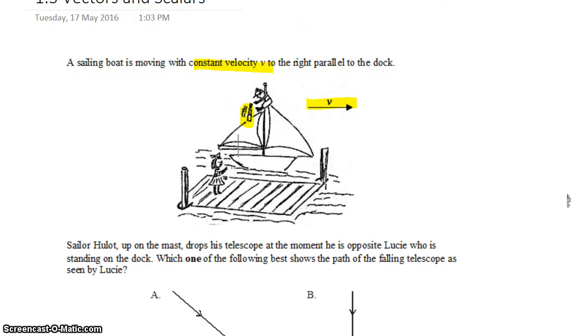So according to Lucy, she sees this telescope falling. It's going to have a component of its velocity which is downward. But at the same time it was moving with the sailboat at the moment it was dropped. So it still has that constant horizontal velocity, v, associated with it.